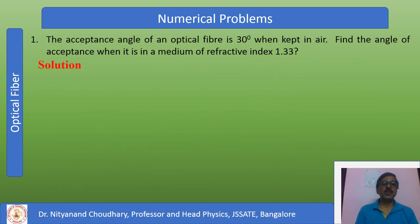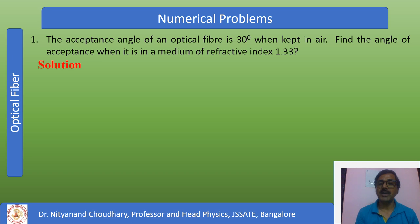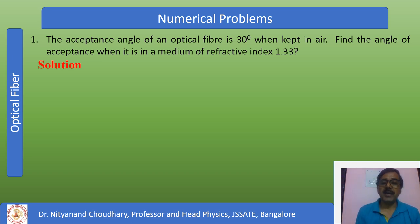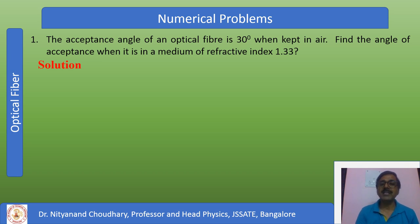Here is problem number one. The acceptance angle of an optical fiber is 30 degrees when kept in air. So theta naught is given as 30 degrees when launched from air medium. The acceptance angle in air medium is given as 30 degrees — that is, you are going to launch the signal from the air medium.